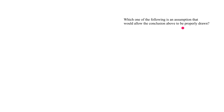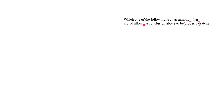Let's take a look at another question stem that says 'which one of the following is an assumption that would allow the conclusion above to be properly drawn.' This is different phrasing from what we've seen before, but 'properly drawn' means the same thing as 'follows logically.' In other words, they're asking us to make the argument valid — so this is a sufficient assumption question.